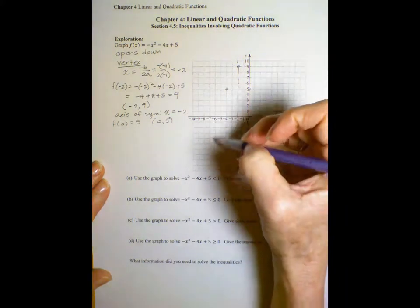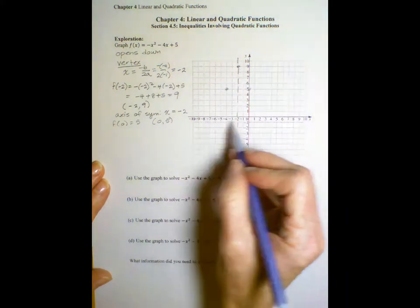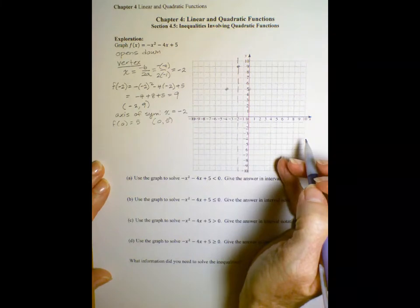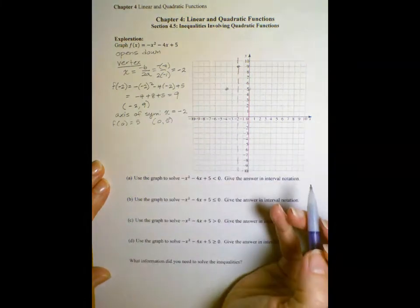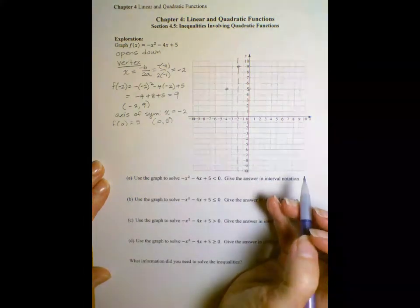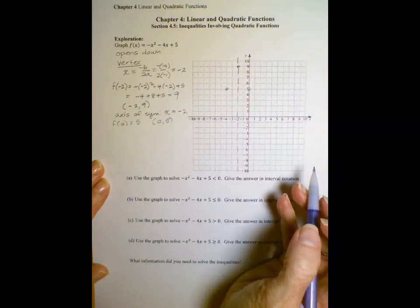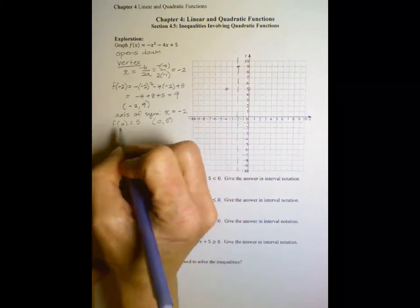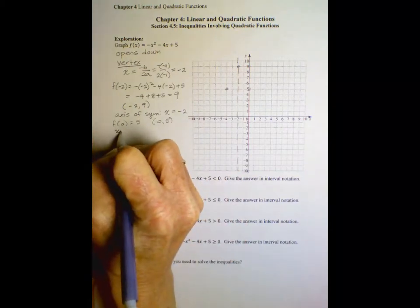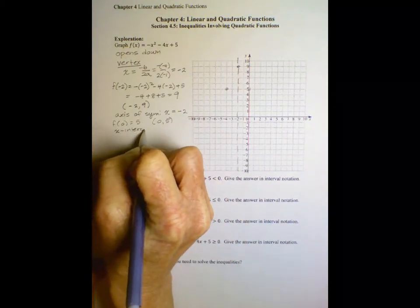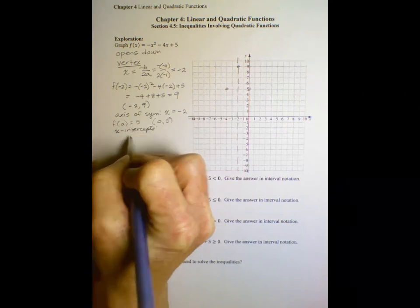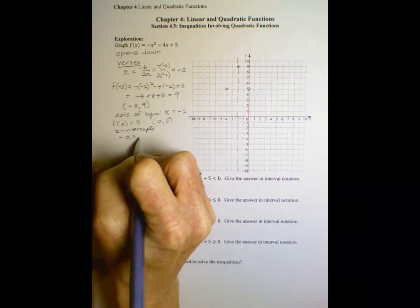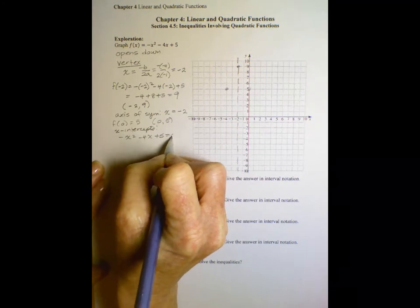We know it opens down, so we definitely have two x-intercepts. We could analyze b squared minus 4ac to find out what that is, that it is a positive number. But because visually we know we'll have two, we can go ahead and find out what those are. So to find the x-intercepts, we set the function equal to 0. Negative x squared minus 4x plus 5 equals 0.